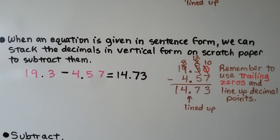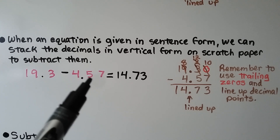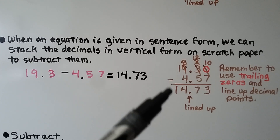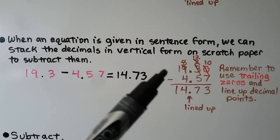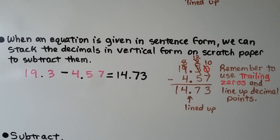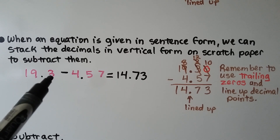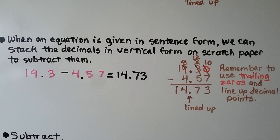When an equation is given in sentence form, we can stack the decimals in vertical form on scratch paper to subtract them. We have 19 and 3 tenths minus 4 and 57 hundredths. We stack them up in vertical form, lining up the decimal points. We subtract them as we would any whole numbers, regrouping when necessary, and we can use trailing zeros. This is 3 tenths and this is 57 hundredths, so we put a trailing zero there so we have the same number of digits. We get 14 and 73 hundredths.